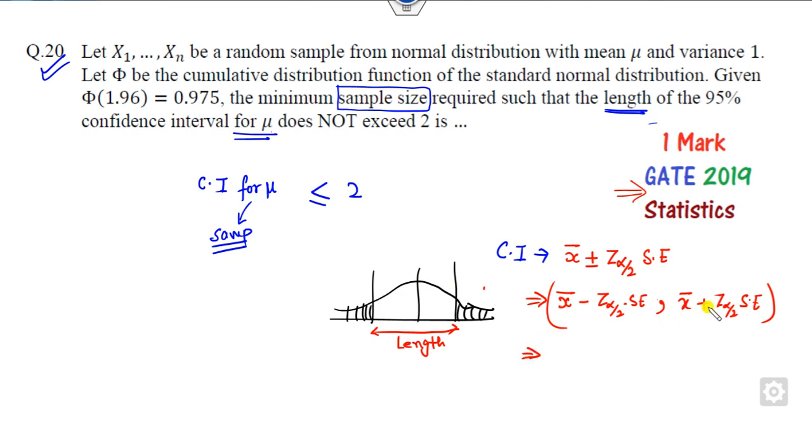How do you find the length of the confidence interval? That is this minus this. If you subtract them, it will be 2 times Z alpha by 2 of standard error, and it must be less than 2.